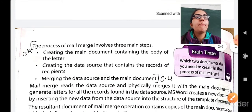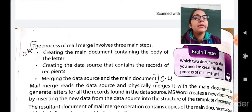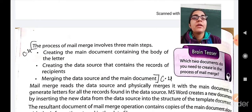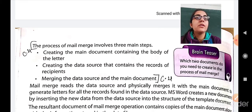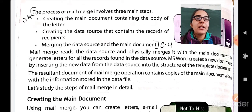The process of mail merge involves three main steps. First, creating the main document containing the body of the letter. Second, creating the data source that contains the records of the recipients. And third, merging the data source and the main document. Mail merge reads the data source and physically merges it with the main document to generate letters for all the records found in the data source. MS Word creates a new document by inserting new data from the data source into the structure of the template document. The resultant document contains copies of the main document along with the information stored in the data file.